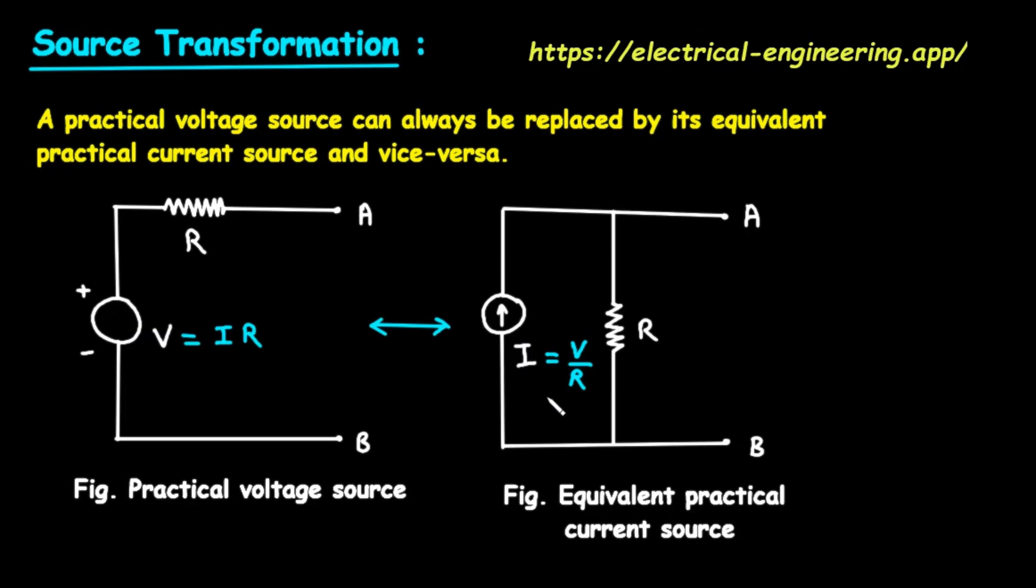Now, let's go from right to left, transforming a current source into a voltage source. Imagine we start with the practical current source on the right. We know its current, I, and its parallel resistance, R. Step 1, the resistor. Again, the resistor R keeps its value. It just moves from being in parallel with the current source to being in series with the new voltage source.